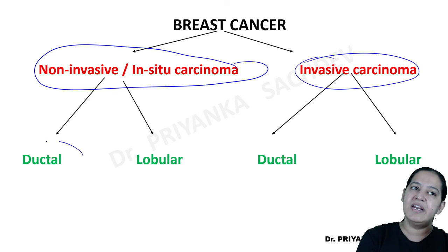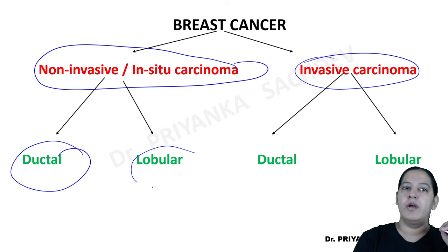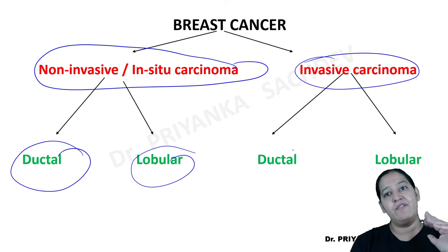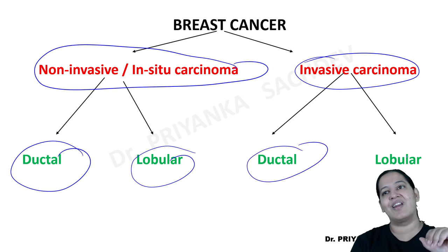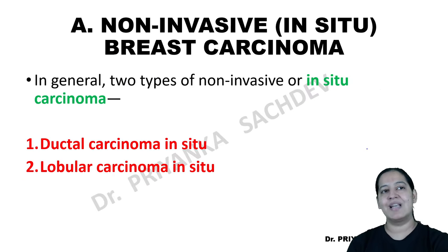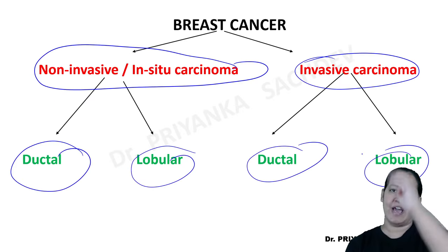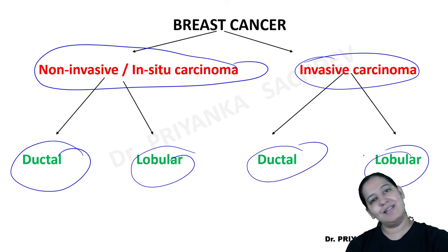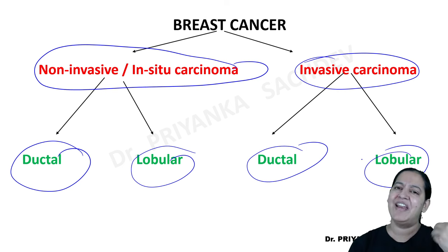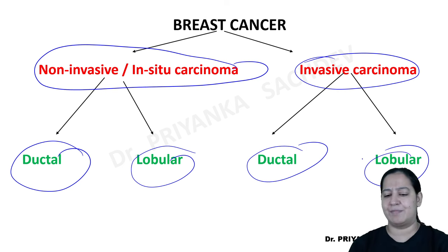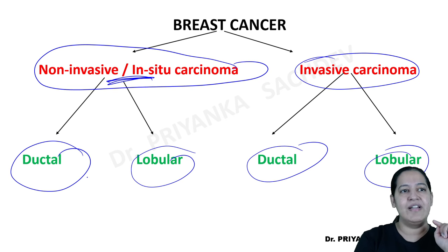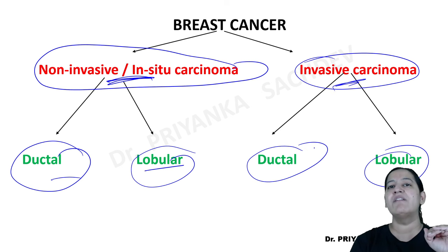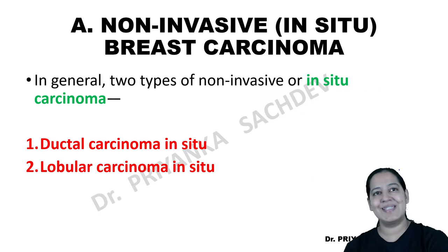If non-invasive occurring in a duct, it is ductal. Occurring in a lobule, it is lobular. Invasive occurring in a duct, it is ductal. And occurring in a lobule, it is lobular. I will teach you four microscopic pictures for each of them, and in the end we will revise and compare them. First talk about non-invasive — I will teach you ductal and lobular, then I will jump on invasive.